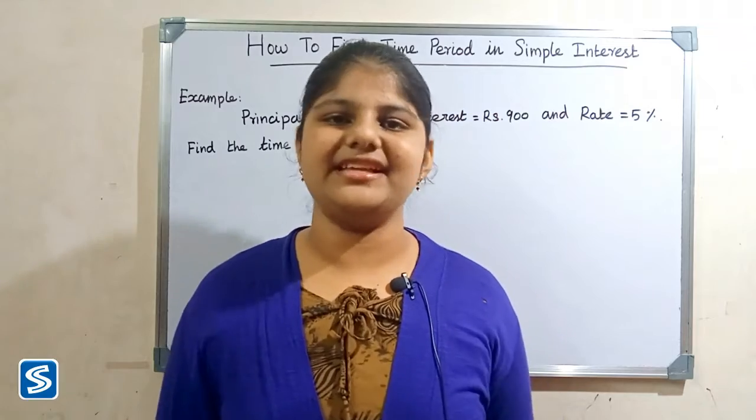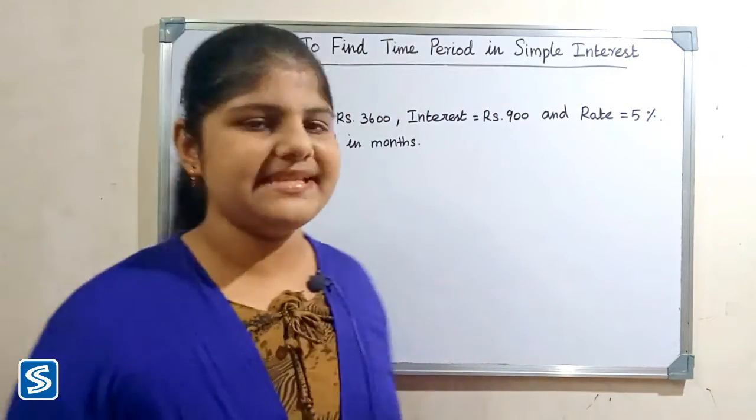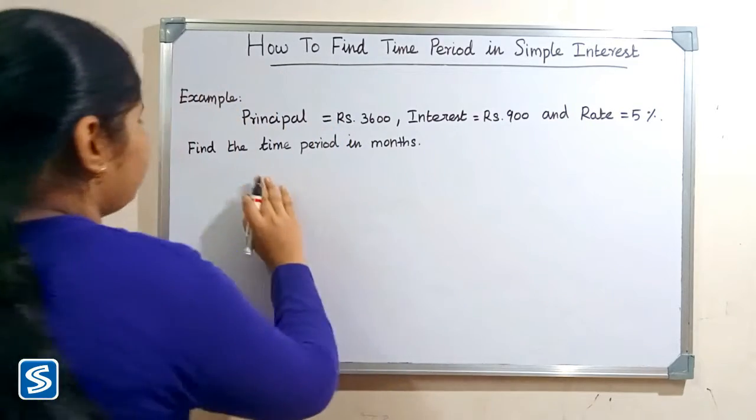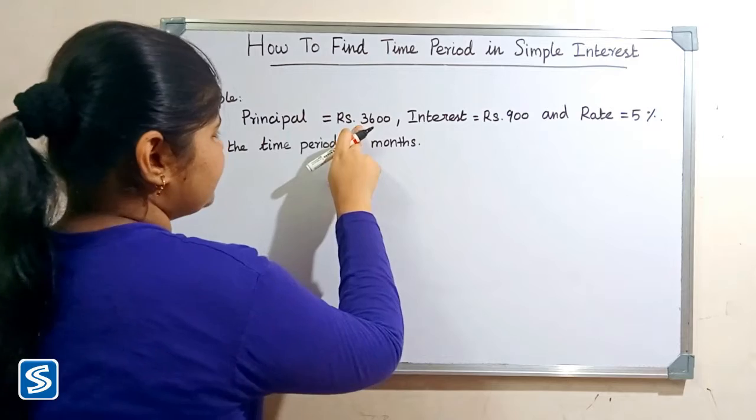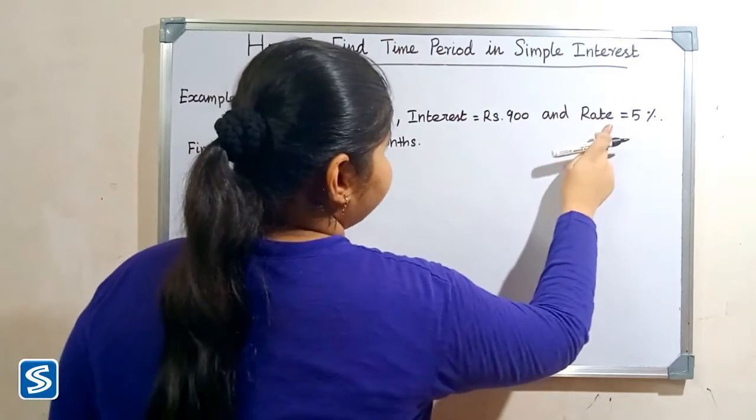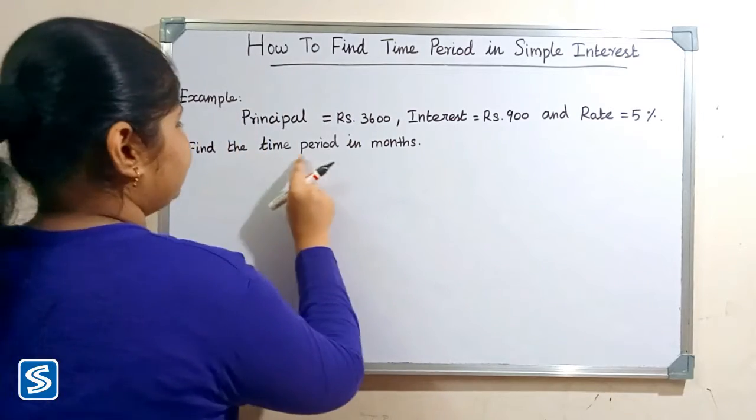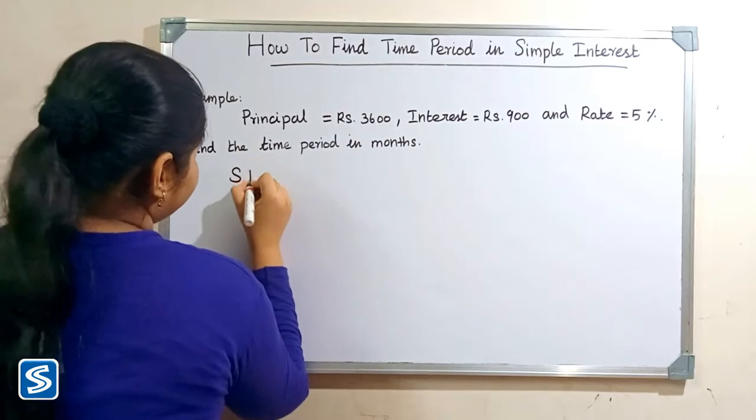Hi friends, welcome to so much channel. In this video I'm going to teach how to find time period in simple interest. For example, we can take principal amount is rupees 3600, simple interest is rupees 900, and rate of interest is 5 percentage. So find the time period in months.